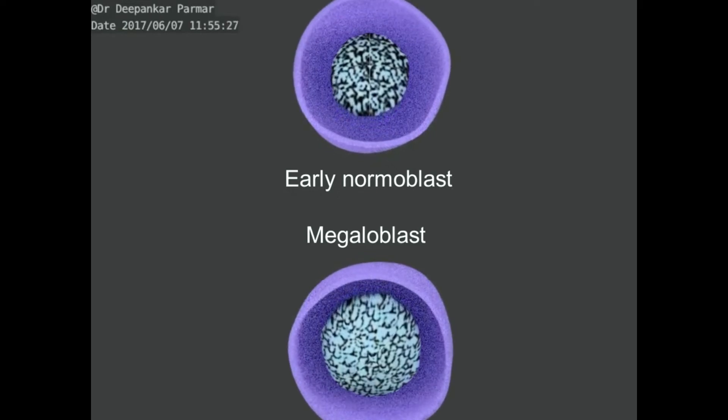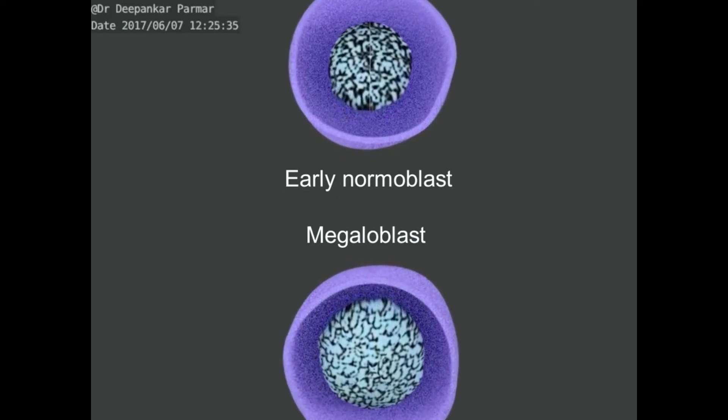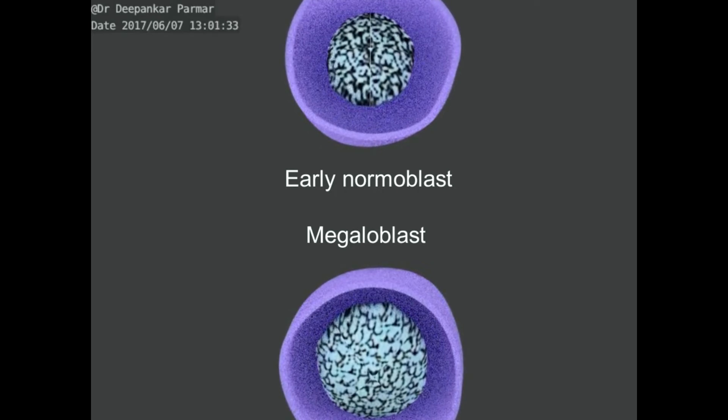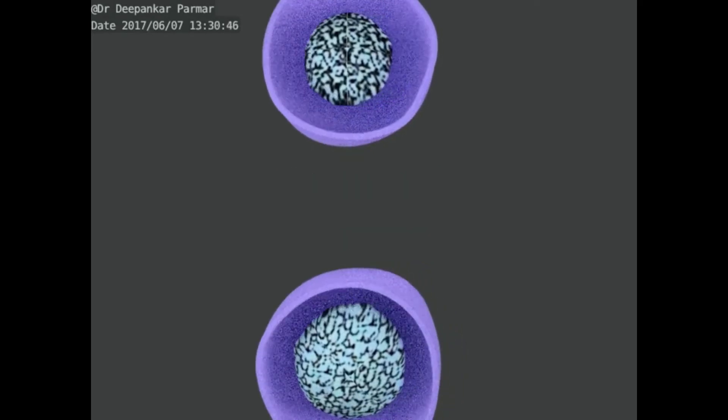Here, you are seeing an early normoblast compared to its corresponding megaloblastic cell of the same stage.